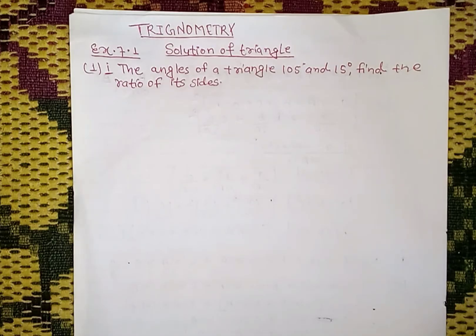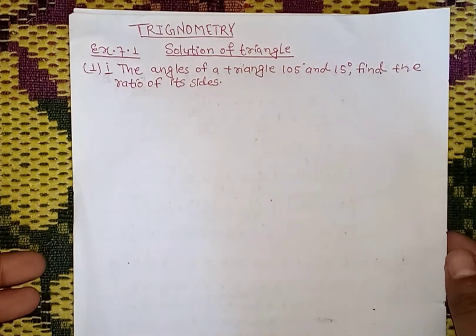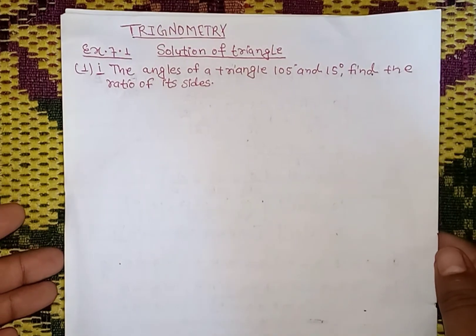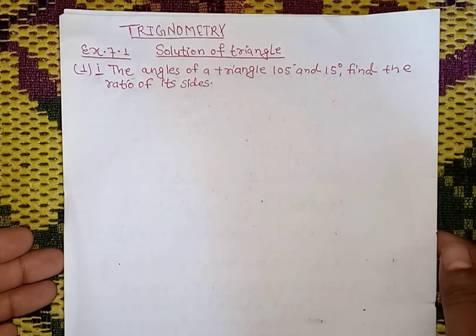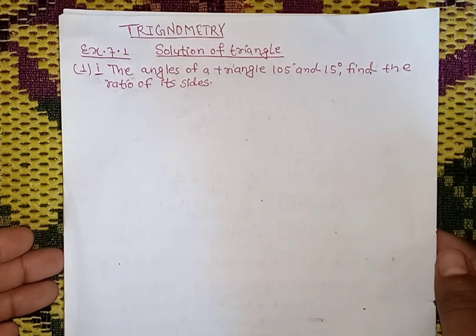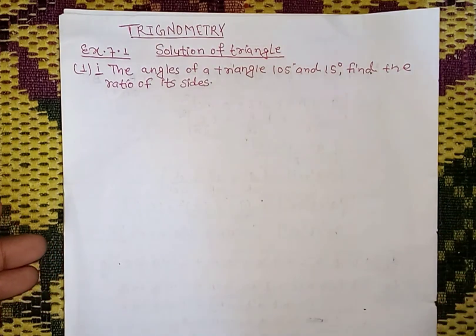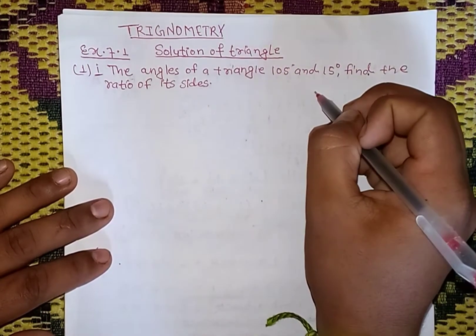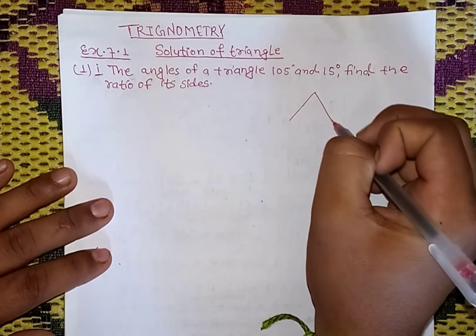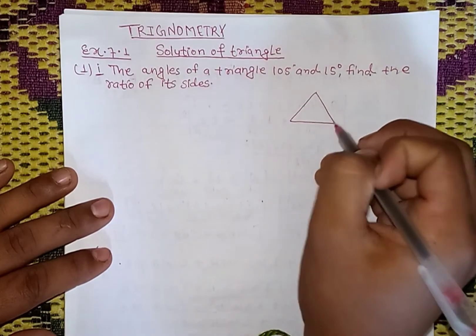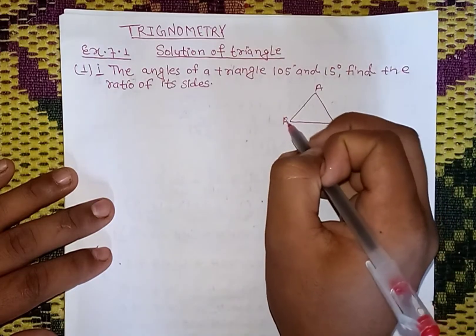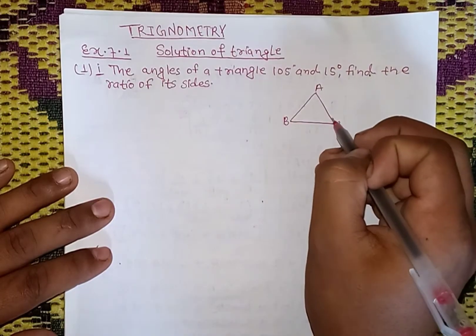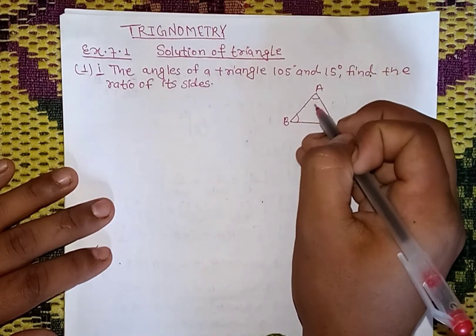First question: the angles of a triangle are 15, 105, and 15 degrees - find the ratio of its sides. We have two angles to identify the triangle. We make a triangle with this side ratio. Here, this is side a, and this is angle C.